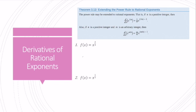The derivative of f of x equals x to the two-thirds is two-thirds x to the negative one-third, and the derivative of x to the one-seventh is one-seventh x to the negative six-sevenths.